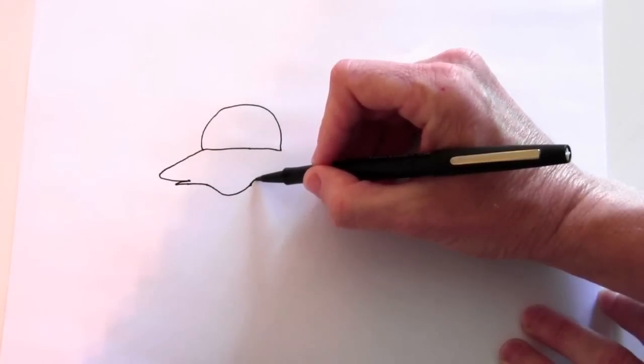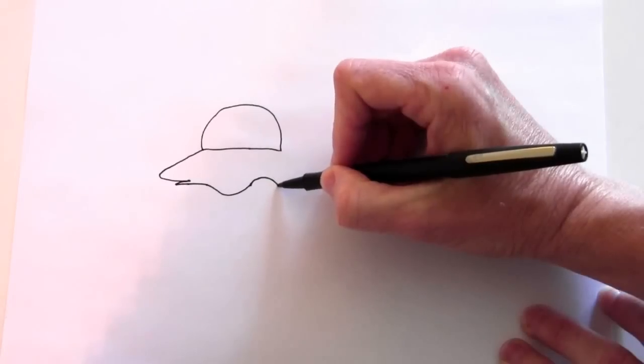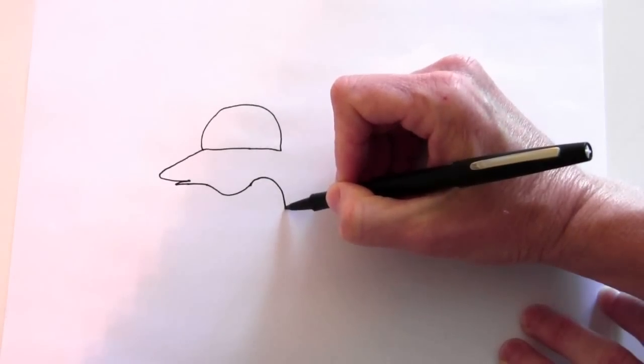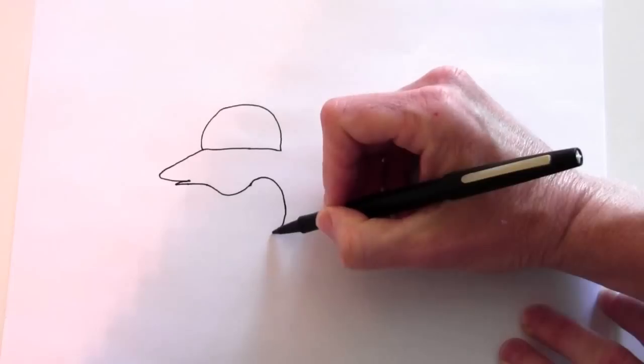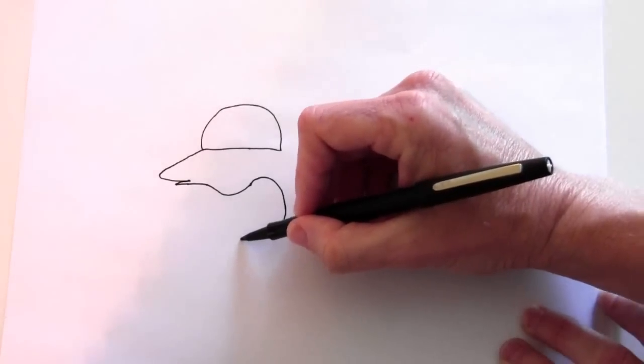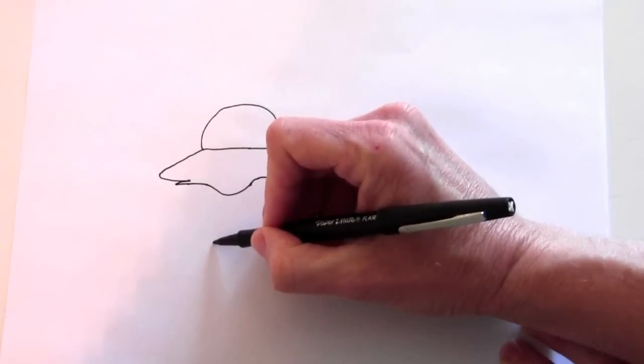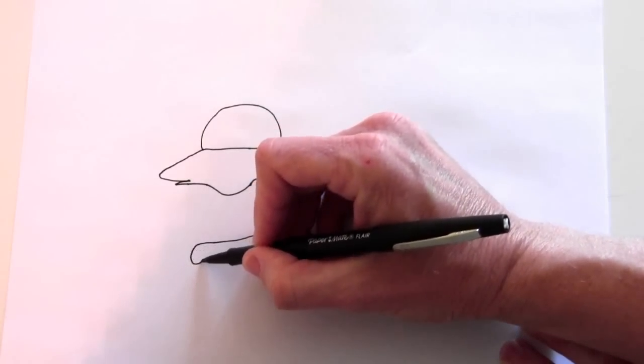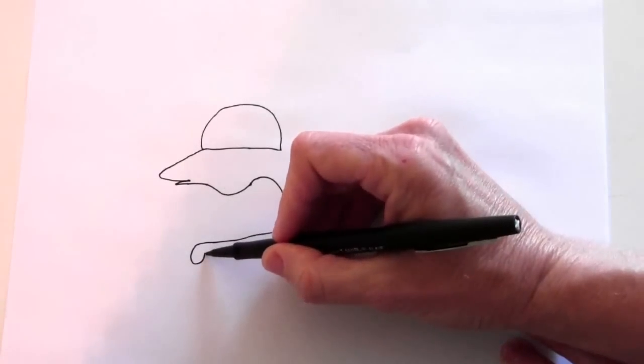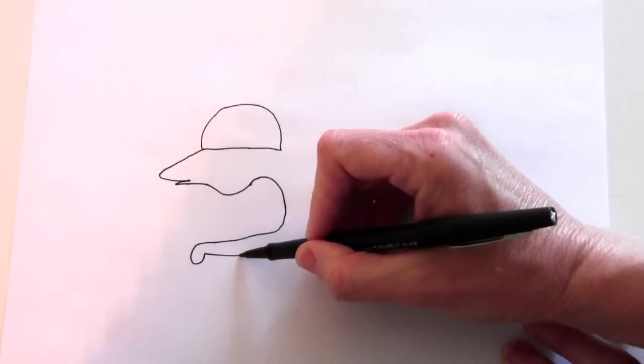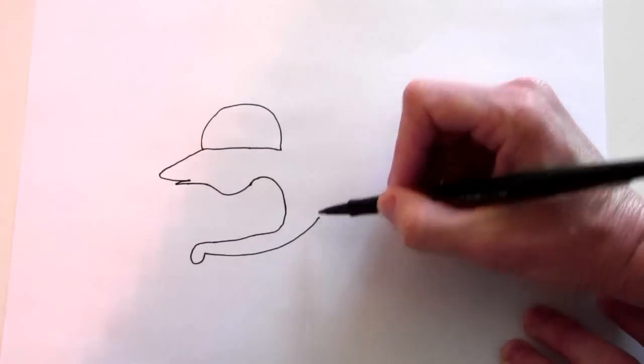This drawing is a little harder so be patient. This is the arm. It swoops down and around to about where the lip is and then it curves down for the hand and back up like this.